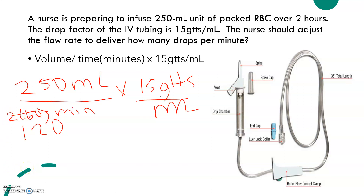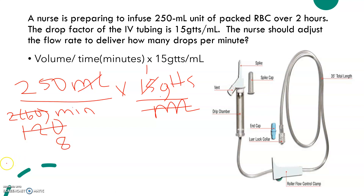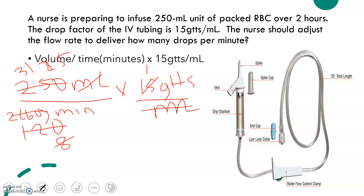Now we're going to cancel the ml with the ml — cancel like terms. 15 into itself goes one time, and 15 into 120 goes 8 times. 8 into itself goes one time, and 8 into 250 goes 31.25. When we plug the numbers in and calculate it, we get 31.25.